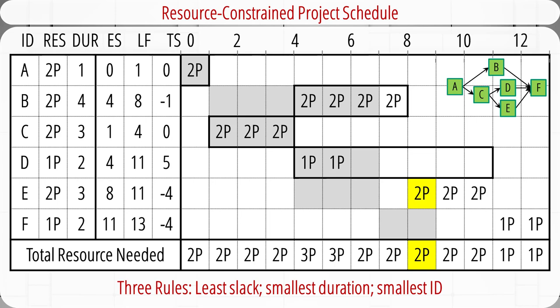We repeat this process and check the rest of the project schedule. For the time between weeks 8 and 9, we don't have resource shortage, so we load activity E into the schedule. Finally, for the time between weeks 11 and 12, we don't have resource shortage, so we load activity F into the schedule.